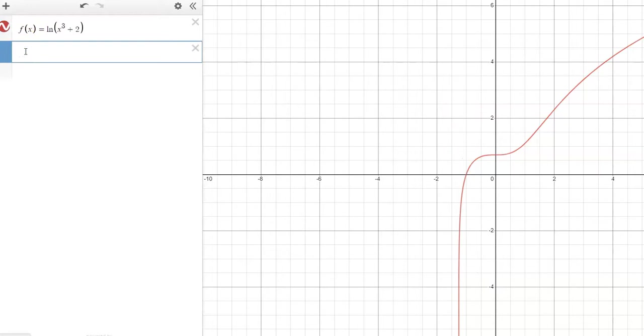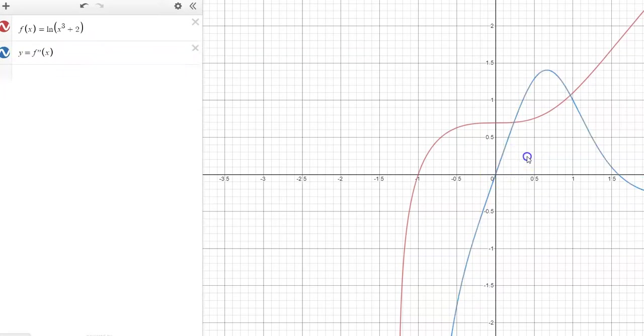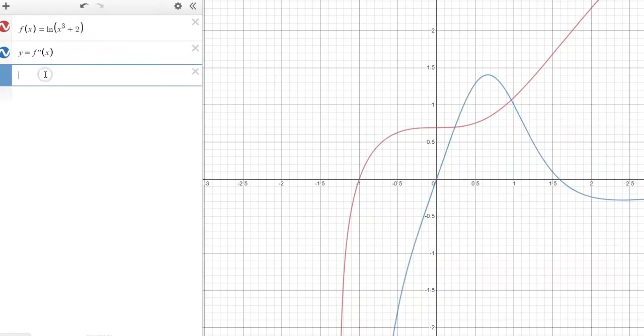But what I want to look at is the second derivative of the function. So I'm going to say y equals f double prime of x, and it will go ahead and graph the second derivative for me. So this is good for just approximating and getting a quick value or a quick estimate.